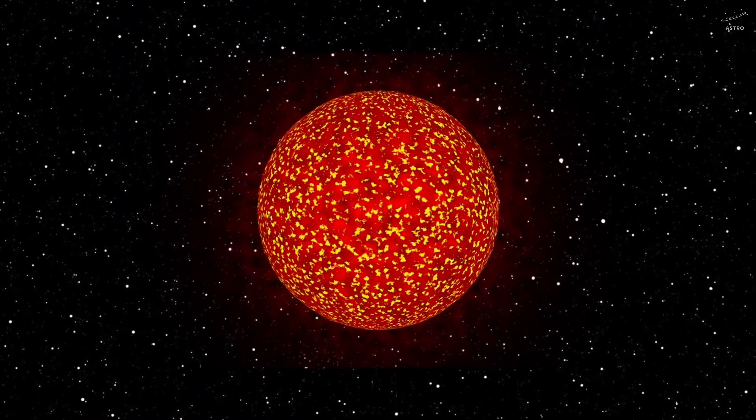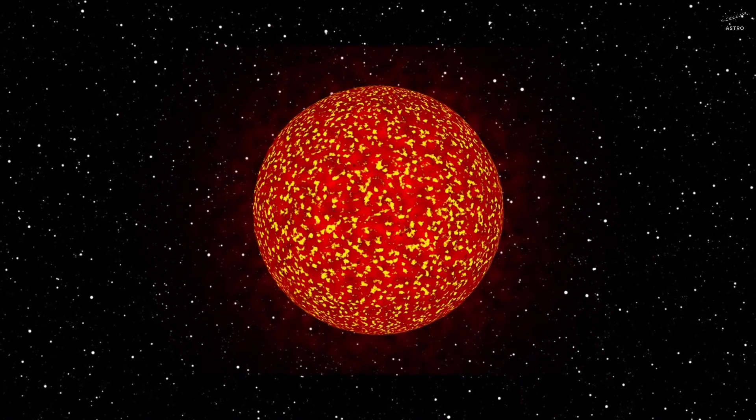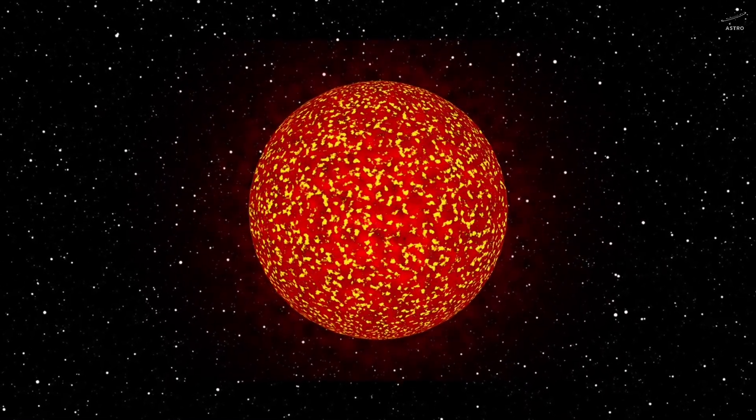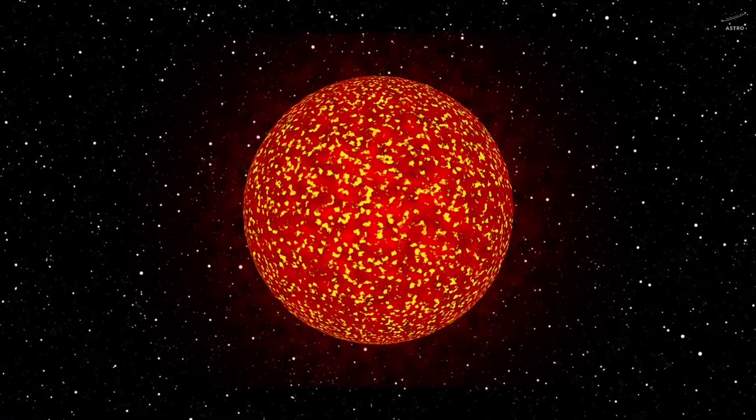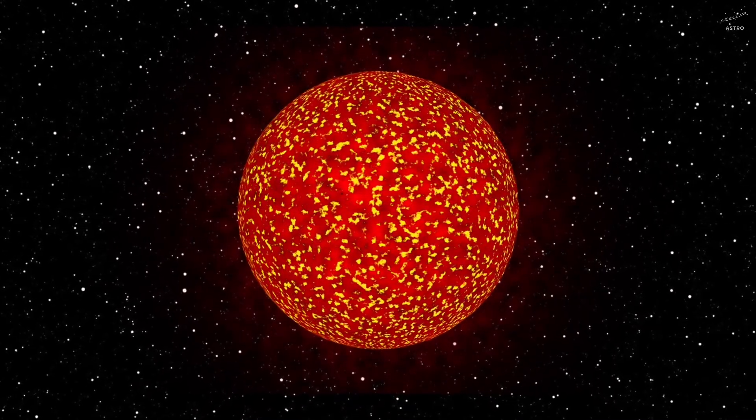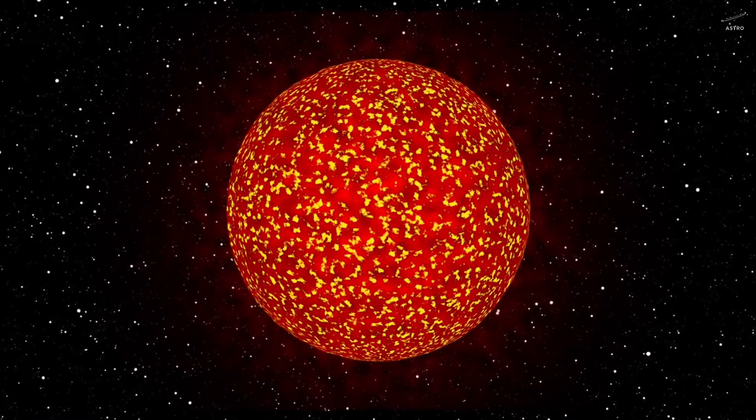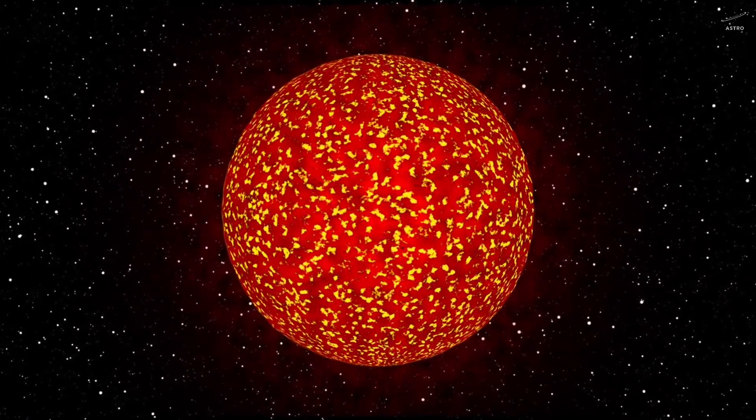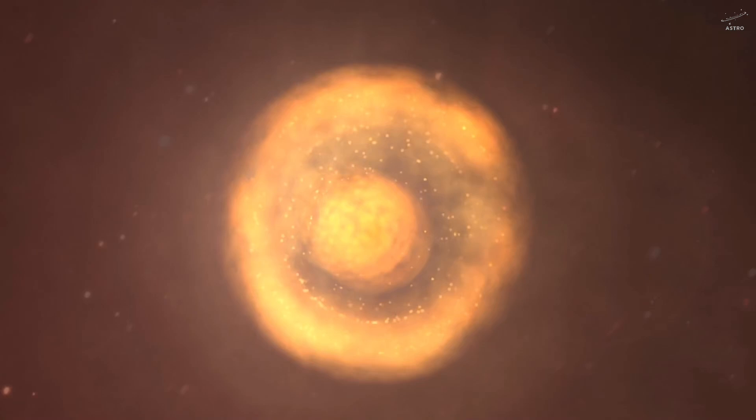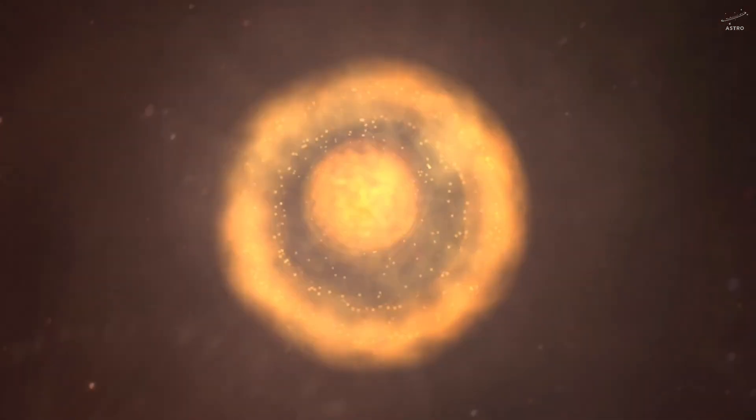Computer simulations show that as the sun nears the end, it will swell to 100 times its current size. But here's the tragic twist. Even though it becomes enormous, it's growing weaker inside. No longer able to hold on to its massive outer layers. Eventually, those layers will be blown off into space.